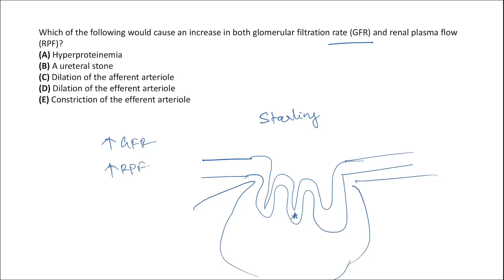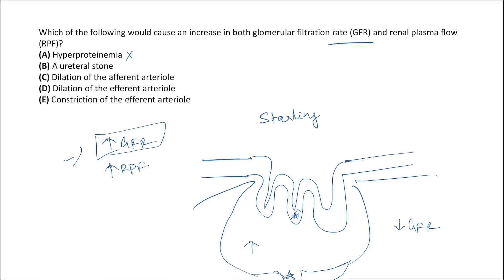Hypoproteinemia would decrease oncotic pressure within the glomerulus, actually increasing the reabsorbing force and decreasing GFR — so the first choice is wrong. A ureteral stone would block urinary outflow, increasing capsular hydrostatic pressure and decreasing filtration, so that would also decrease GFR — also a wrong choice.